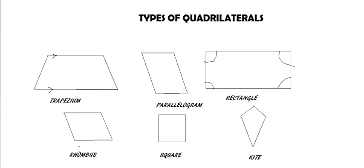Next is a rhombus. A rhombus is a quadrilateral that is also a parallelogram. The more special feature of rhombus is that all of its sides are equal in length. As you can see here, all these sides are equal. This is a rhombus.